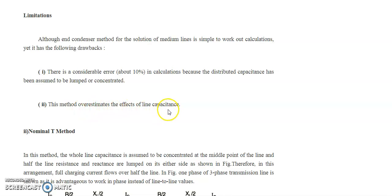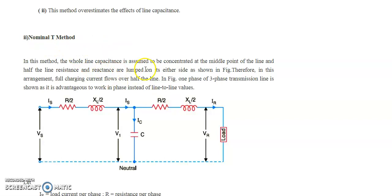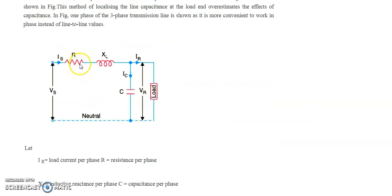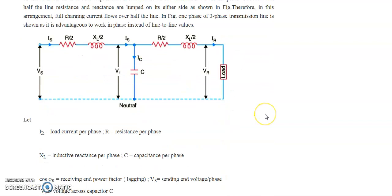The next method is the nominal T method. Here, the total capacitance of the line as a lumped element is considered at the midpoint of the transmission line. For example, for a 100 km line, the capacitance is placed at 50 km. Half the total resistance and half the reactance are lumped on the sending end side, and the other half on the receiving end side. This gives the T-shaped equivalent circuit.